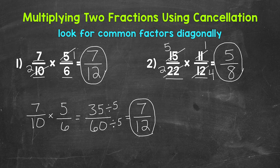Now did we have to use cancellation? No. We could have gone straight across and done 15 times 11 and then 22 times 12 and then simplified. But the cancellation made it easier and simpler as far as multiplying straight across. So there's how to use cancellation when multiplying fractions. Let's move on to division.